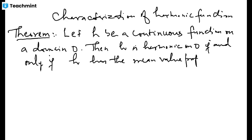We have already seen that harmonic functions satisfy the mean value property. Now we show the converse: any function which satisfies the mean value property is a harmonic function. So we only need to prove that if we have a continuous function which satisfies the mean value property, then such a function is harmonic. The proof will again use the Poisson integral.